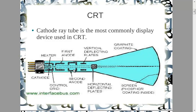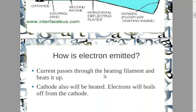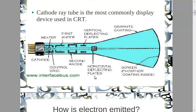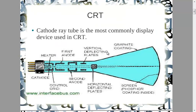The cathode ray tube is one of the most used display devices. The main question is how does this display device work? It actually works by producing an electron beam, and we know that electrons produce a certain amount of energy. We're going to see the different stages of how these electrons affect the phosphor atoms.